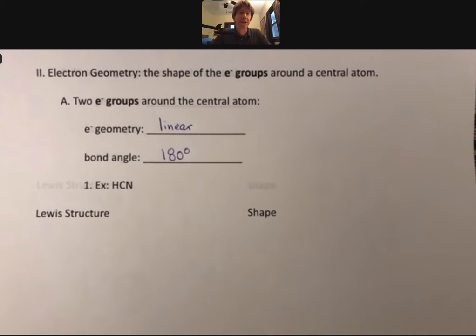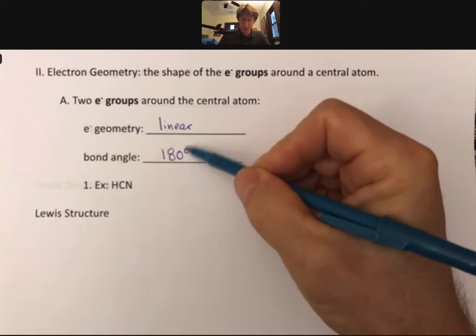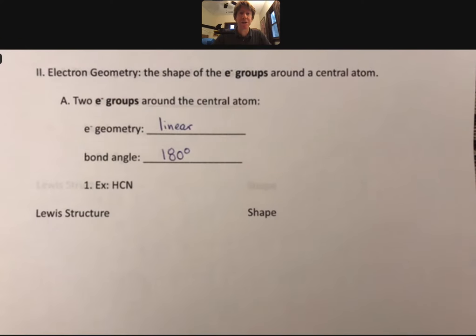The bond angle will be 180 degrees. I think this will make a lot of sense once we go through some examples, one of which we see right here, HCN, which we just talked about. But it's a good idea to always associate these two things together, linear and 180 degrees. Basically memorize them, although we'll be able to figure it out too.